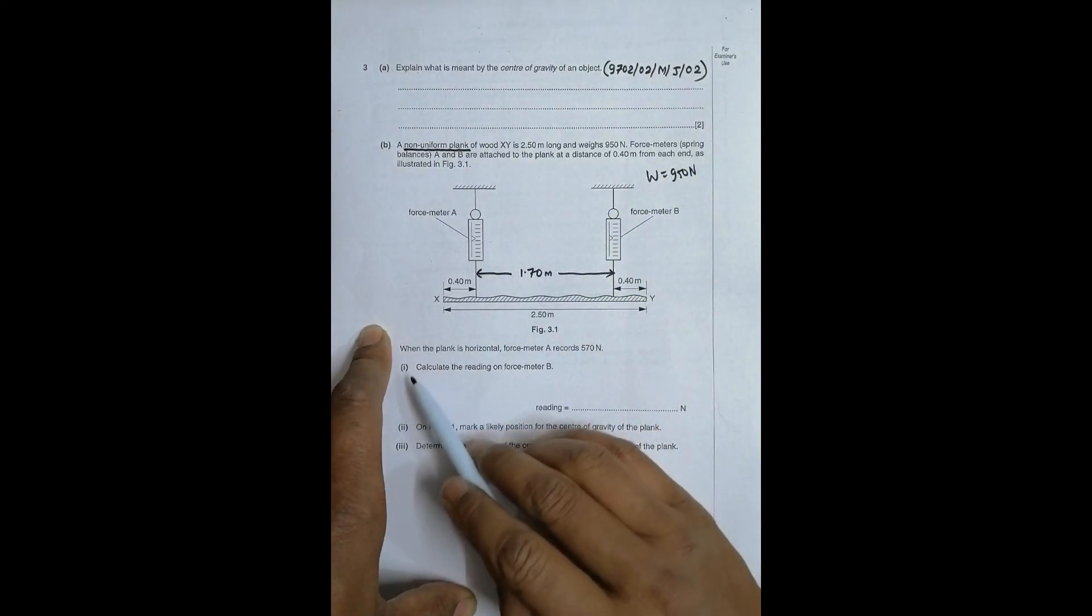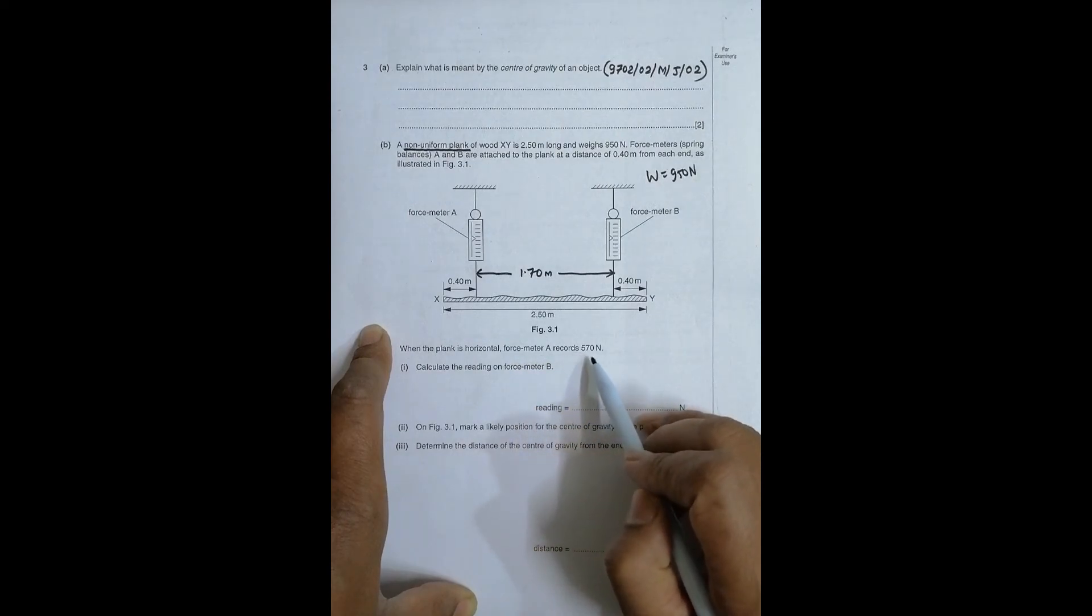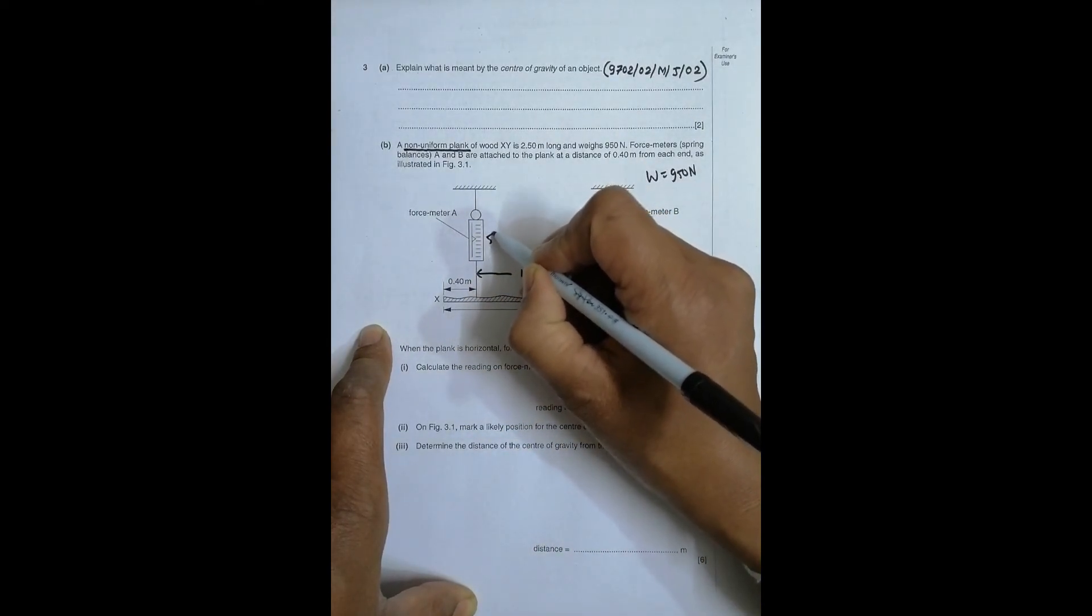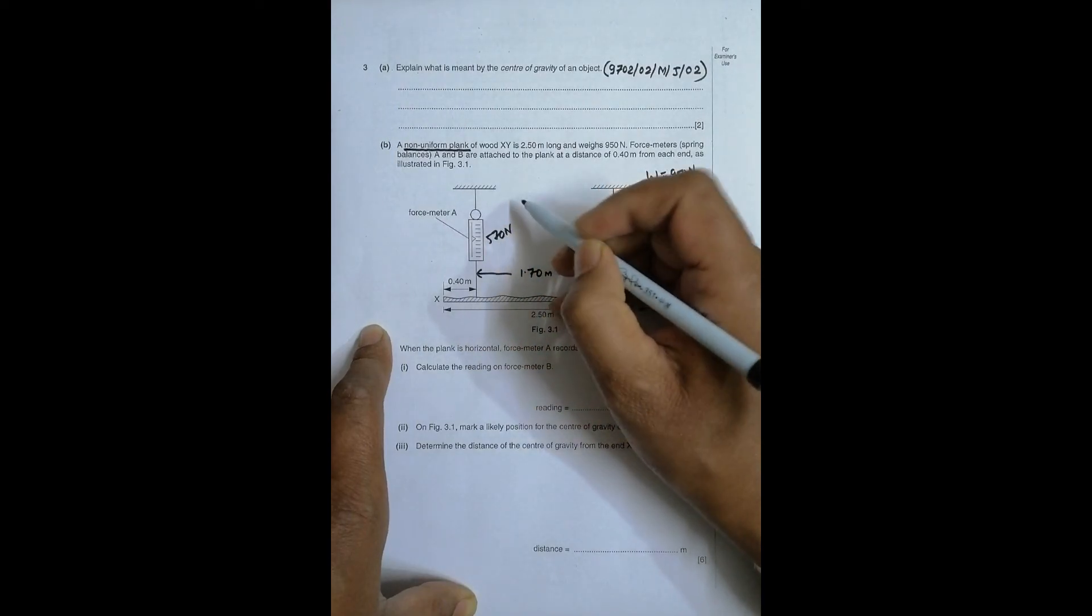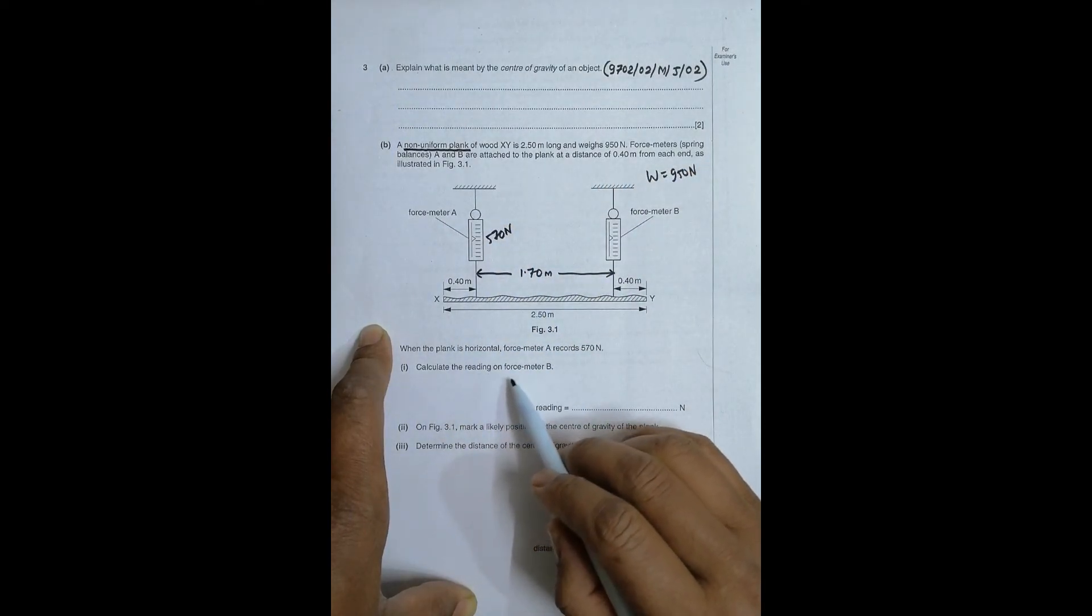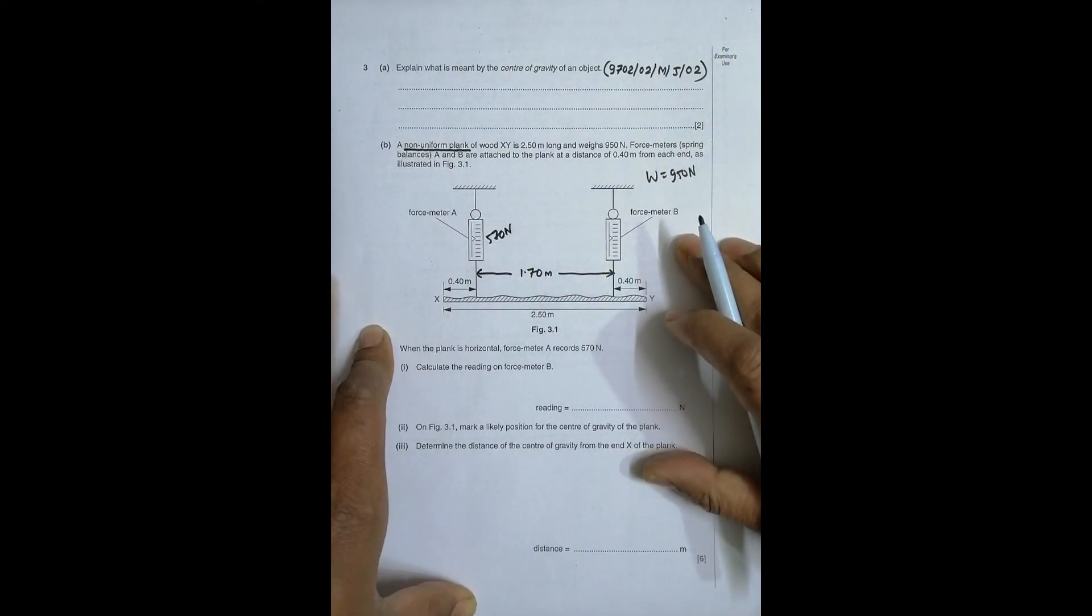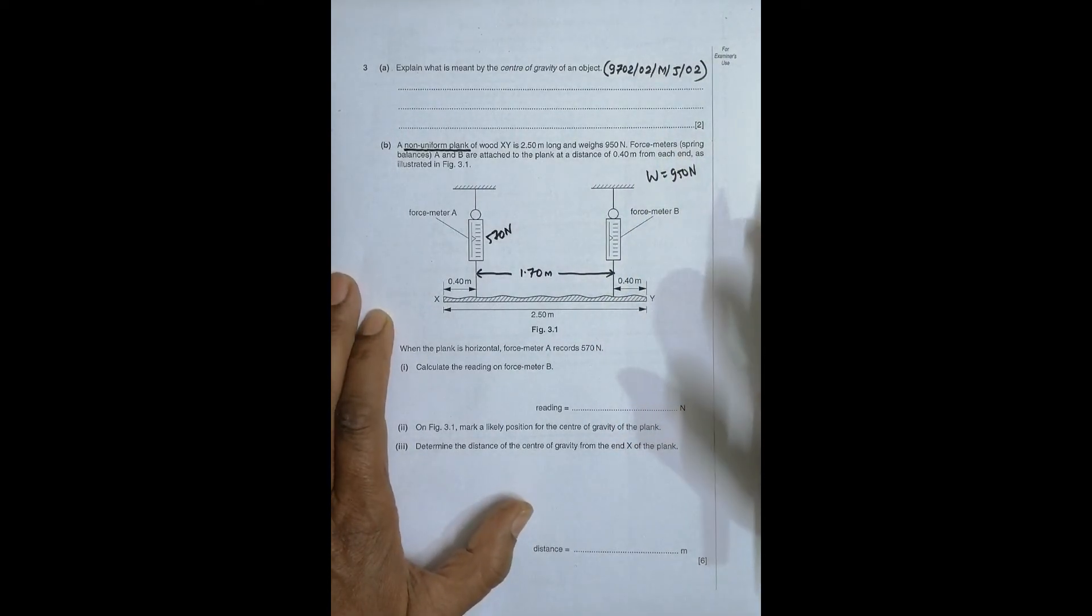When the plank is horizontal, force meter A records 570 Newton. Calculate the reading on force meter B. So I have to find the reading here. One thing that we have to remember is that this body is in equilibrium.